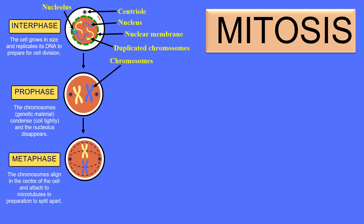After prophase, the next phase is metaphase. In this phase the chromosomes are pulled toward the center of the cell at the metaphasic plate. This pulling is due to the spindle fibers, which are microtubules made from the centrioles.